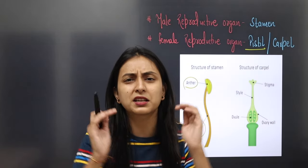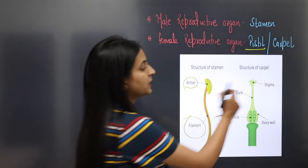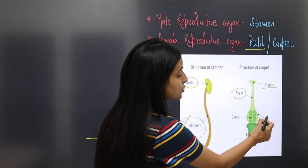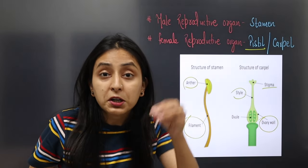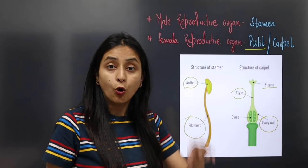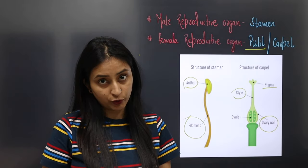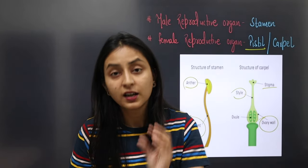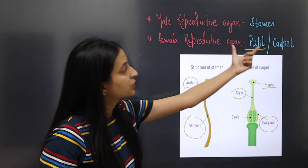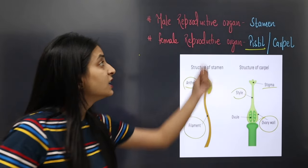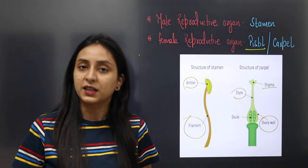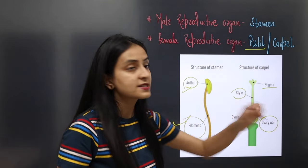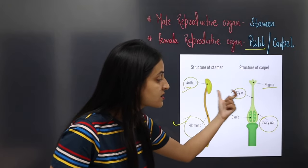The pistil is shaped like a stick. The upper part is called stigma, the middle stalk is called style, and the main region that plays a role in fertilization is the ovary. The carpel has three parts: stigma, style, and ovary.